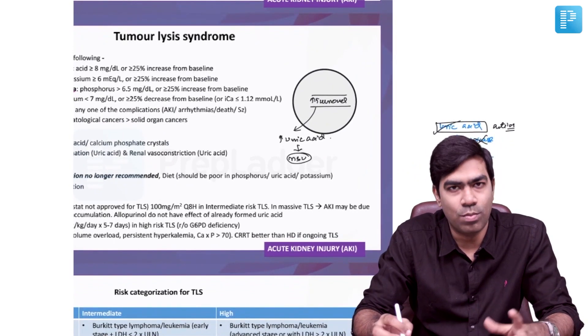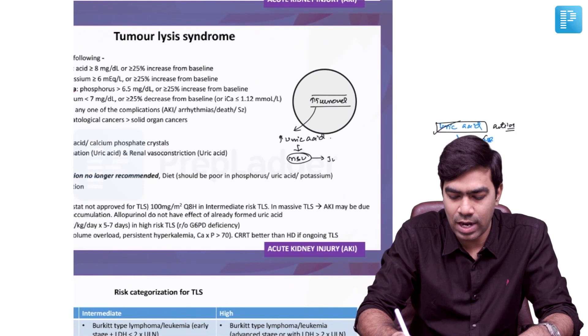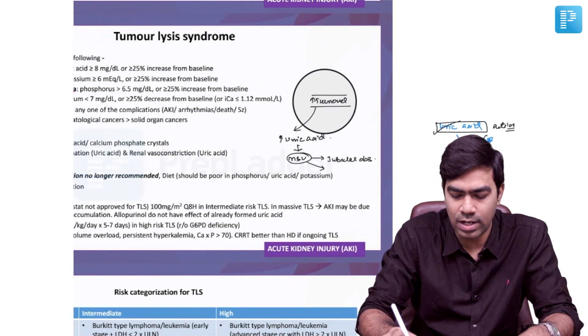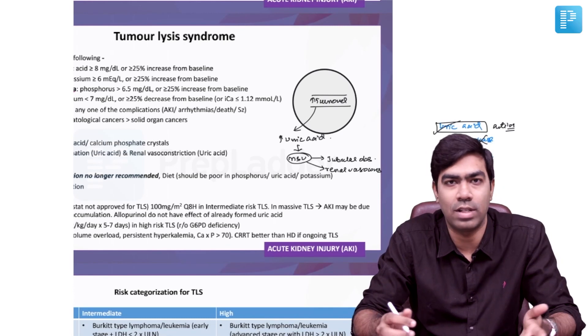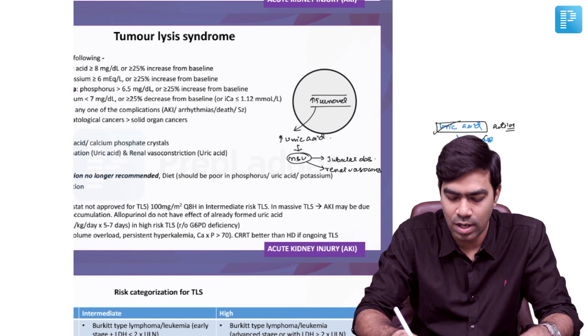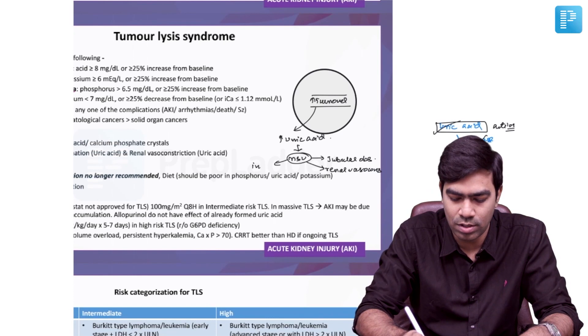What are the problems of these monosodium urate crystals? First, they can cause tubular obstruction. Second, they can produce severe renal vasoconstriction and subsequent ischemia to the nephrons and ischemic acute tubular necrosis. And third, they can produce interstitial nephritis.